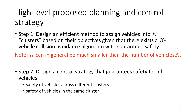The high-level idea of our planning and control strategy is as follows: first, we design an efficient method to assign vehicles into K clusters based on their objectives, given that there exists a K-vehicle collision avoidance algorithm that can guarantee safety for K vehicles. Note that we assume the number of clusters K can in general be much smaller than the number of vehicles N. In the next step, we design a control strategy that can guarantee safety for all pairs of vehicles.